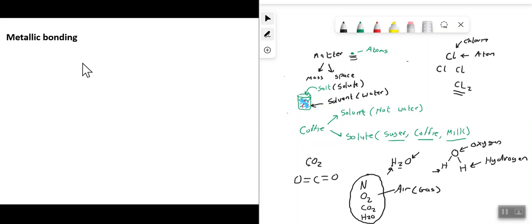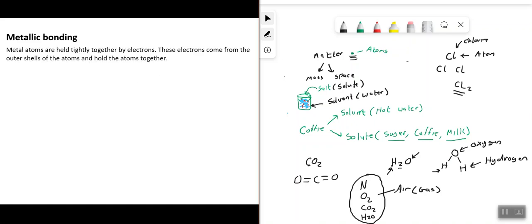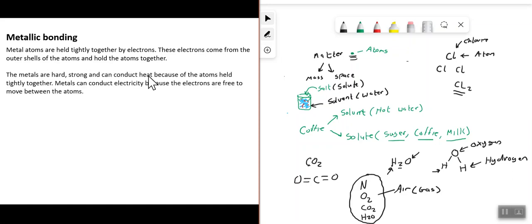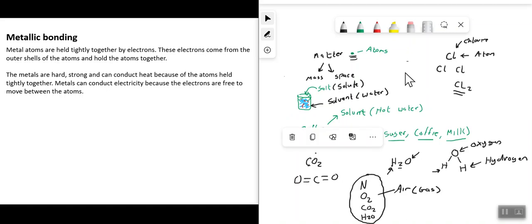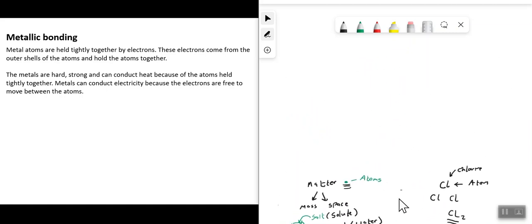Metals bond through what's called metallic bonding. Metal atoms are held tightly together by electrons that come from the outer shell of the atom. This is why metals are hard, strong, and can conduct heat. Metals can also conduct electricity because the electrons are free to move between atoms.